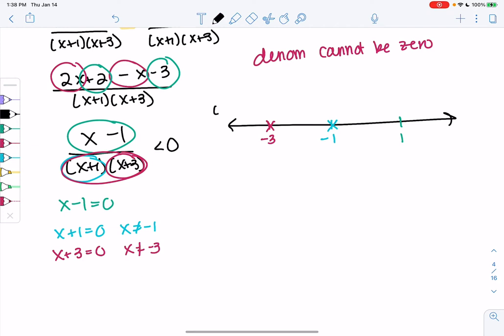So it looks like we're going to have 4 intervals this time. We have negative infinity to negative 3, negative 3 to negative 1, negative 1 to 1, and 1 to infinity.